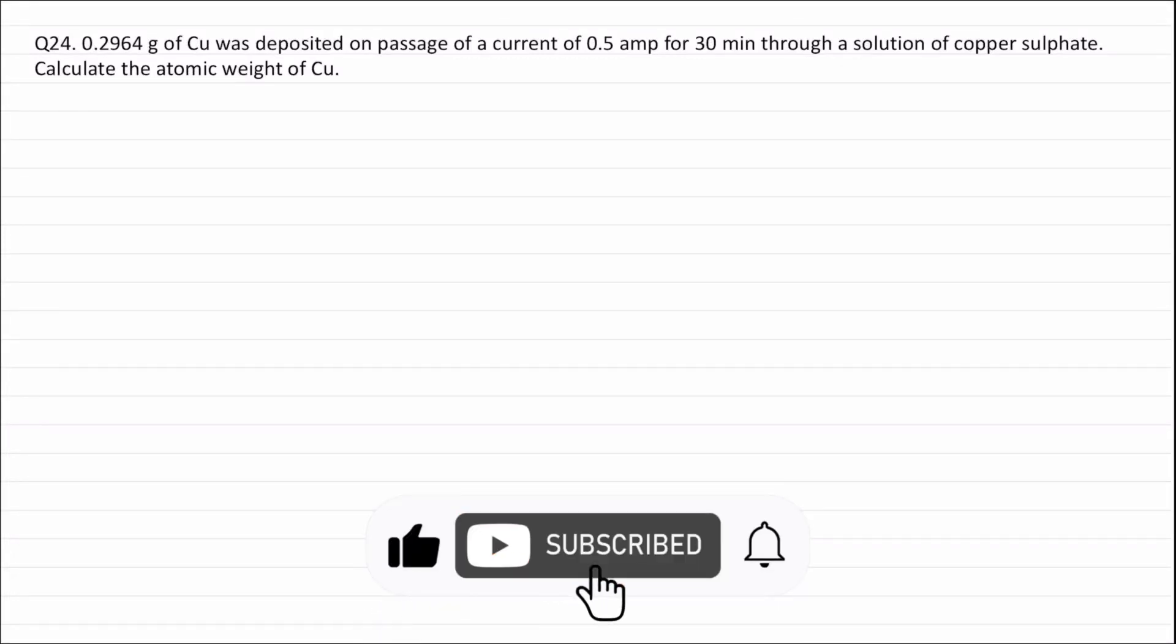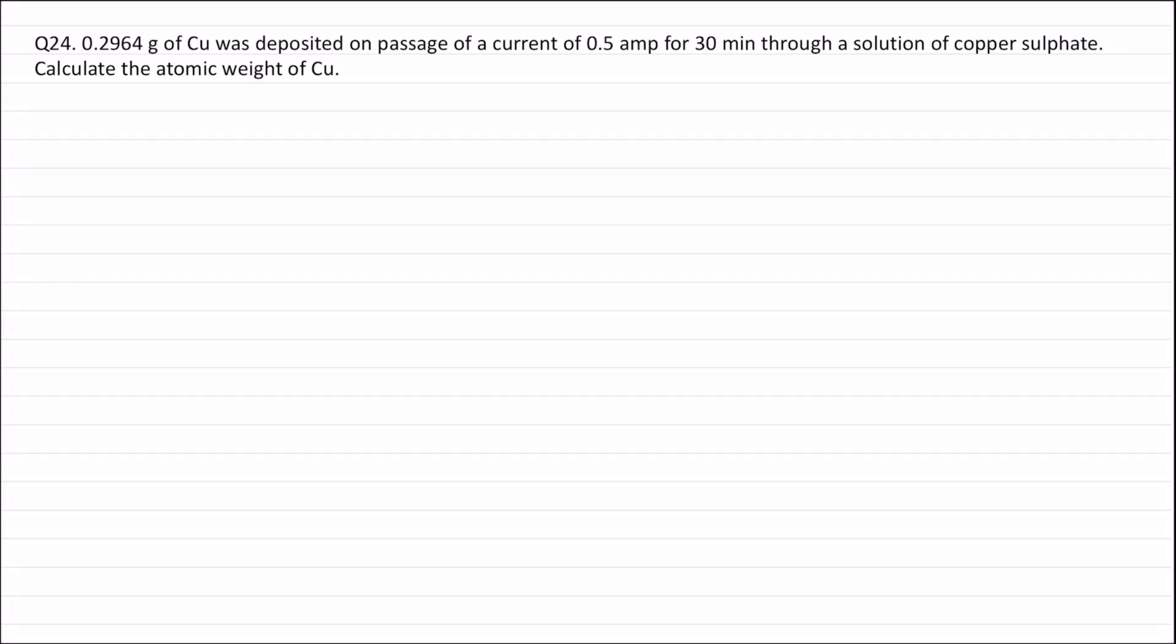Question 24. 0.2964 gram of copper was deposited on passage of a current of 0.5 ampere for 30 minutes through a solution of copper sulphate. Calculate the atomic weight of copper.